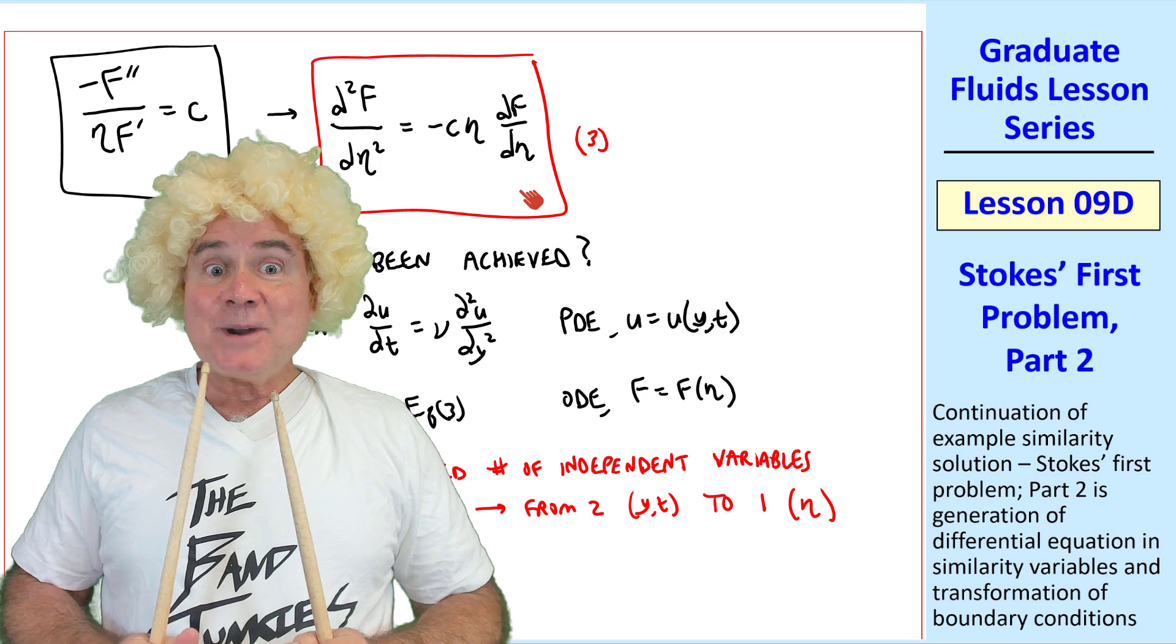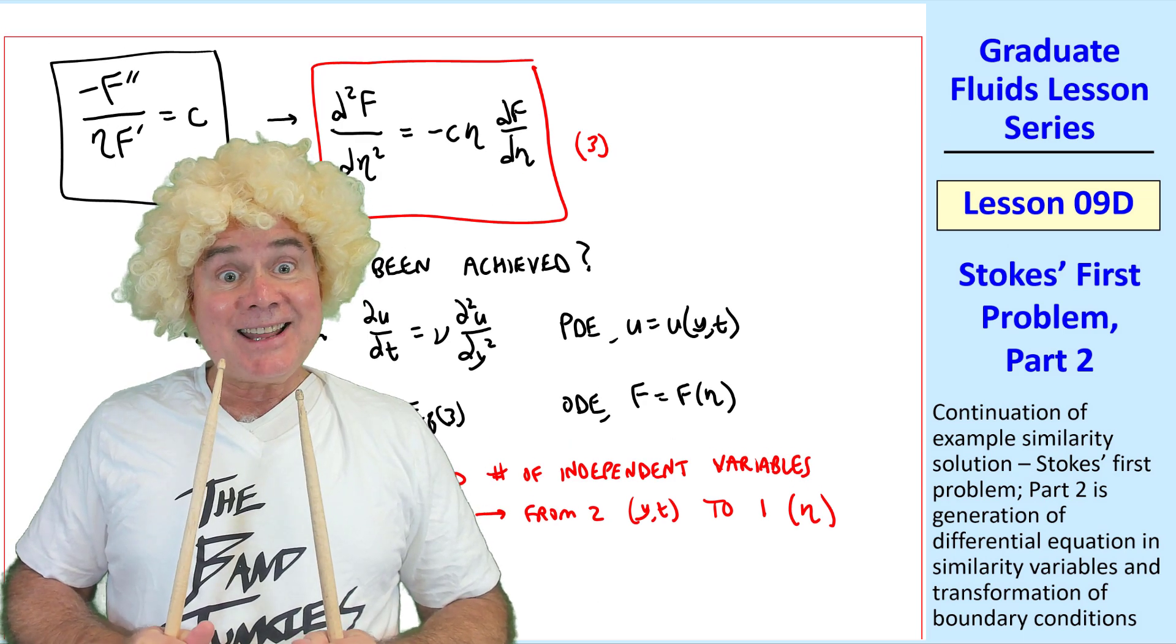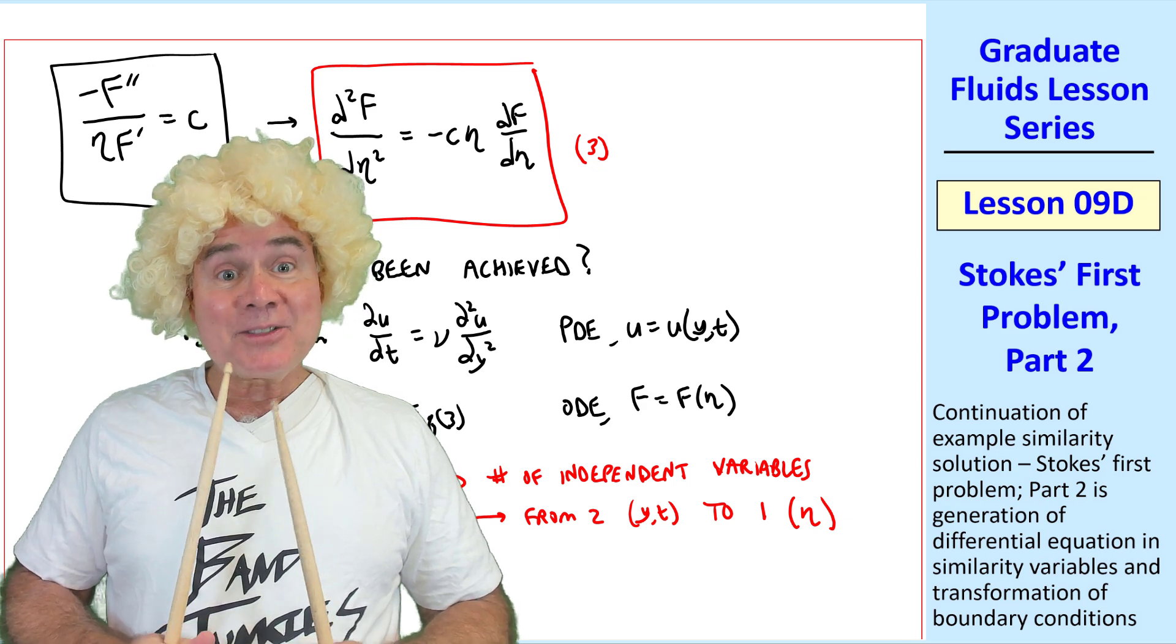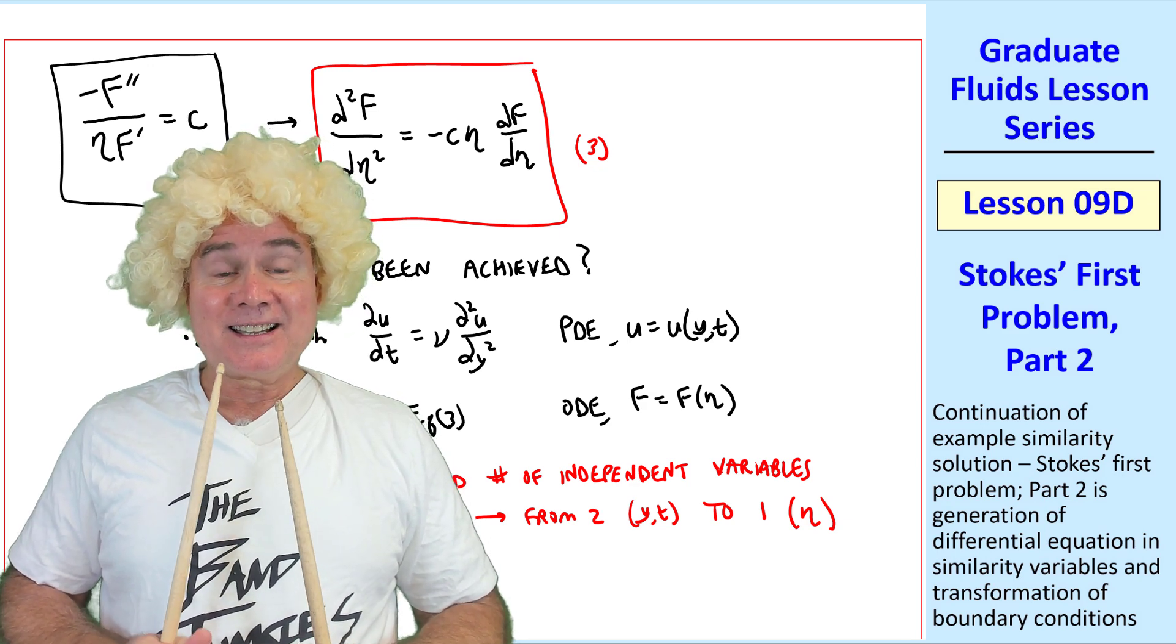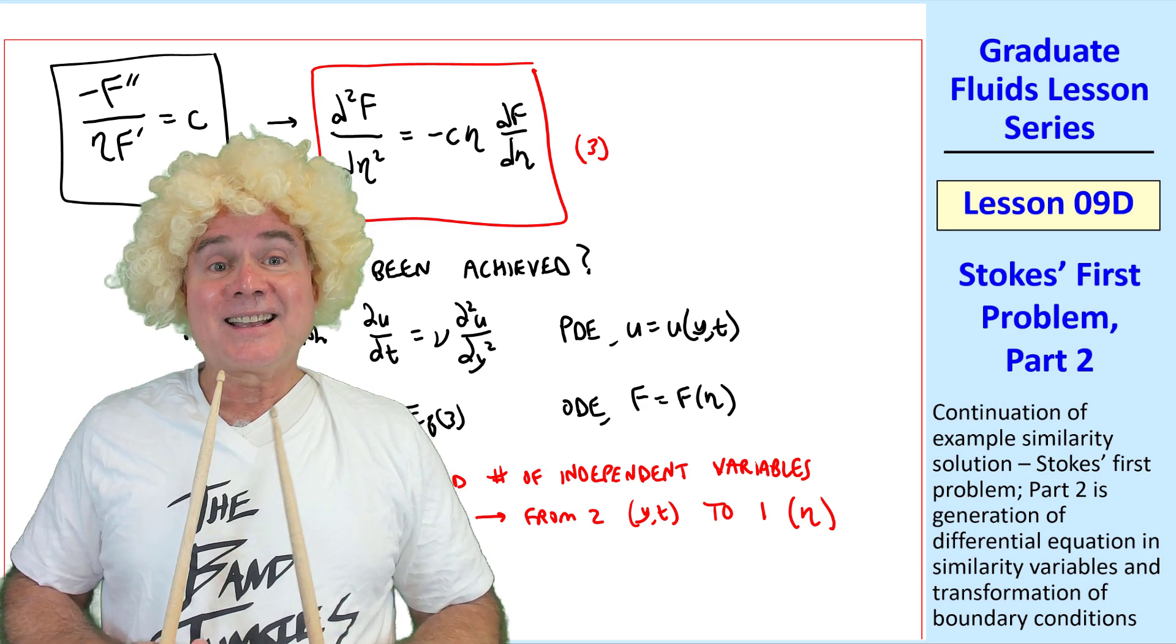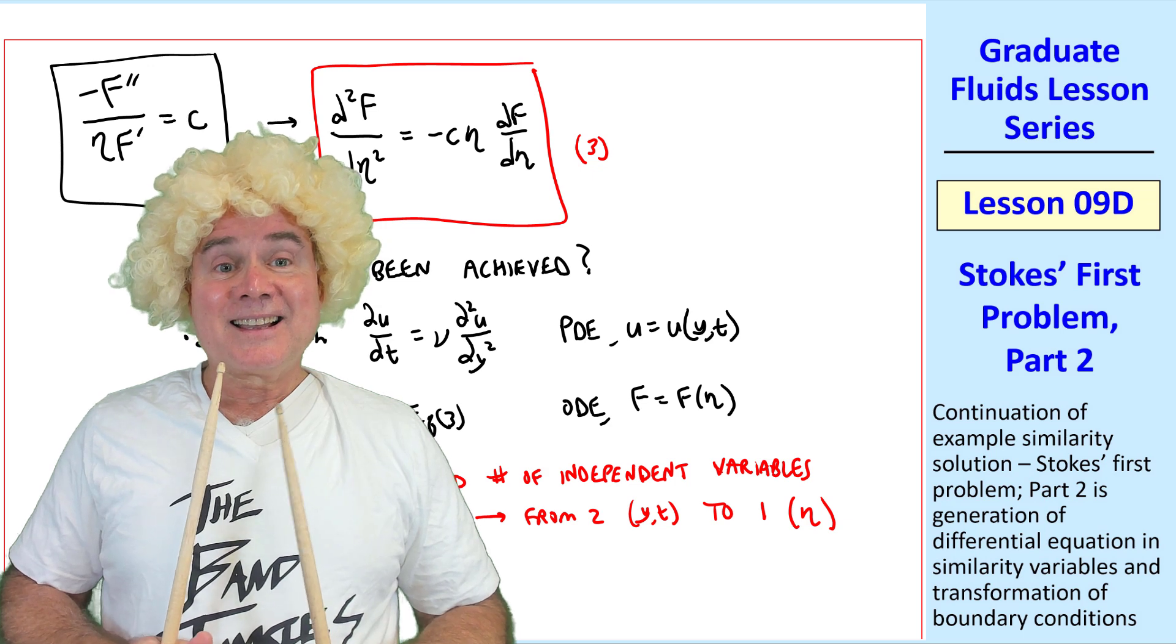But sir, equation 3 is second order. So that means we need two boundary conditions. But in the original problem, we have three boundary conditions. Great observation, BJ.